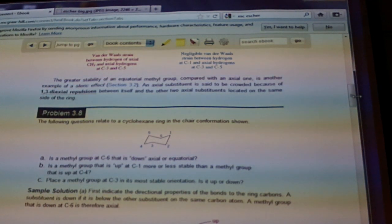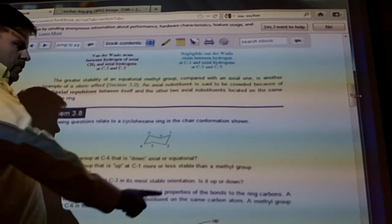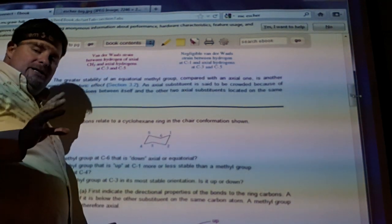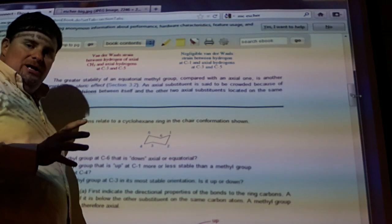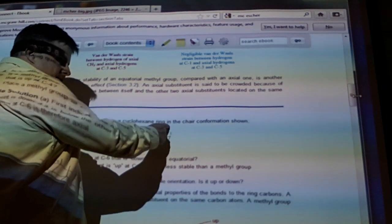So let's look at B. Is a methyl group that is up at C1 more or less stable than a methyl group that is up at C4? At C1, if I have a CH3 that's up, that's axial. Remember, those axial positions, one-three-diaxial interactions exist, that's going to make it less stable. So this is less stable.